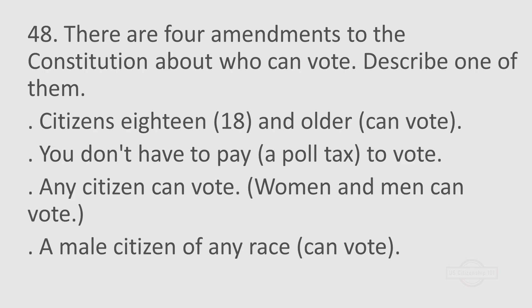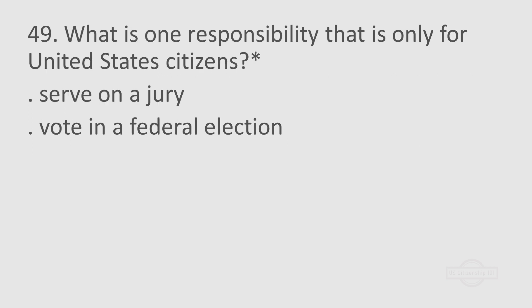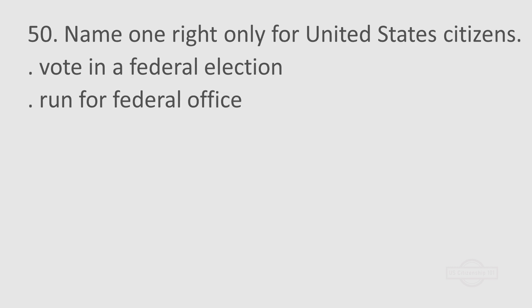Question 48: There are four amendments to the Constitution about who can vote. Describe one of them. Citizens 18 and older can vote. You don't have to pay a poll tax to vote. Any citizen can vote. Women and men can vote. A male citizen of any race can vote. Question 49: What is one responsibility that is only for United States citizens? Serve on a jury. Vote in a federal election. Question 50: Name one right only for United States citizens. Vote in a federal election. Run for federal office.